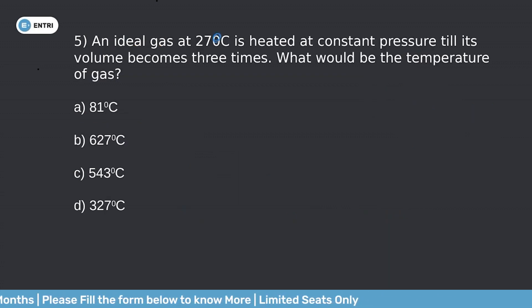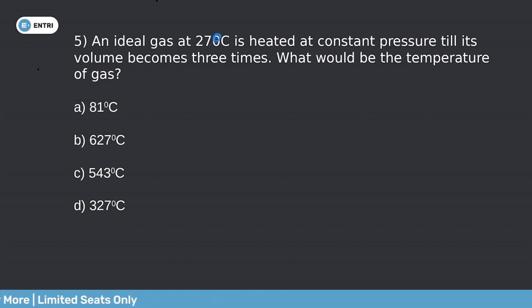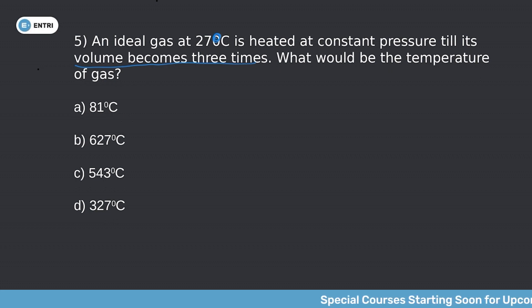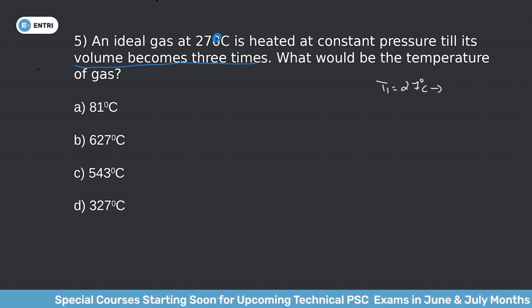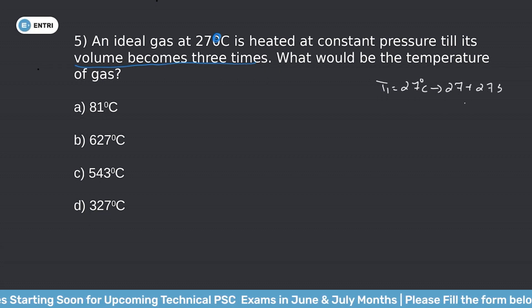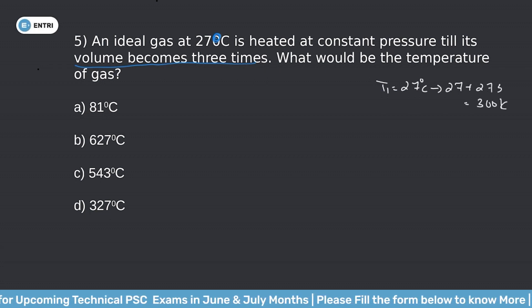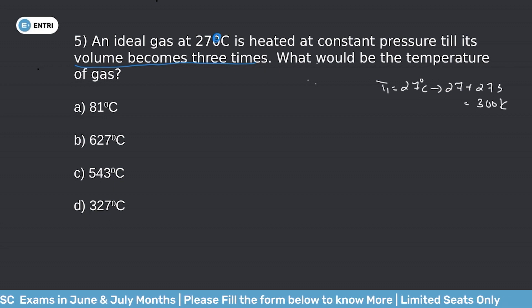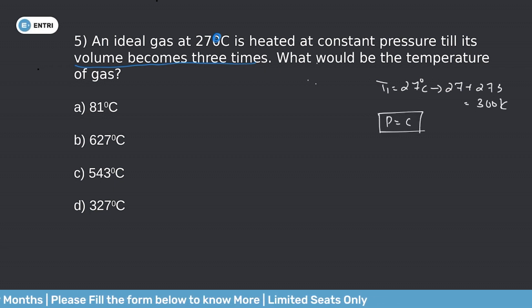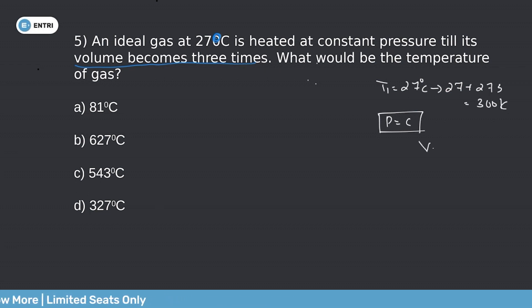Question 5: An ideal gas at 27 degrees Celsius is heated at constant pressure until its volume becomes three times. What will be the temperature of the gas? Given: T1 equals 27 degrees Celsius, which converts to 300 K. The gas is heated at constant pressure, so we apply Charles's law. The final volume V2 equals 3 times V1.